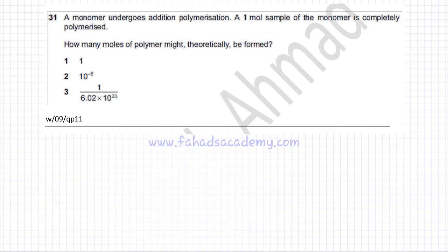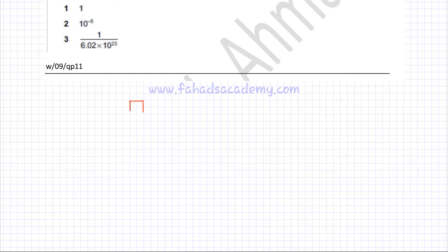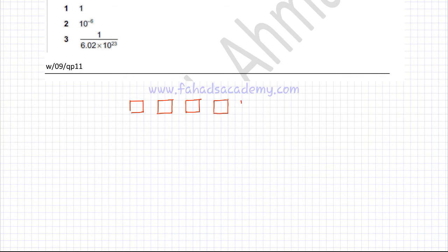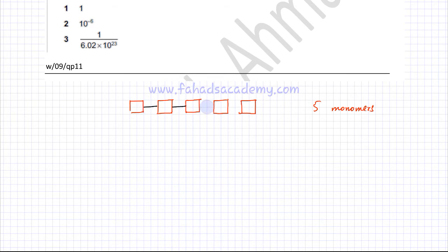First, let me explain what polymerization is. Polymerization is when many small molecules simply add up and form a very large macromolecule. So let's say I have five monomers — five single units, five small molecules. Under certain conditions, they all react together and start linking with each other. So how many polymers are formed? Five monomers join together and they form exactly one polymer.